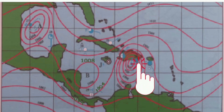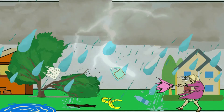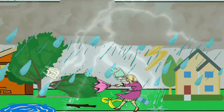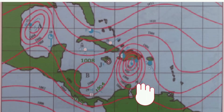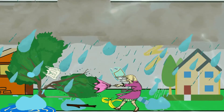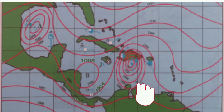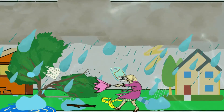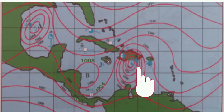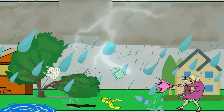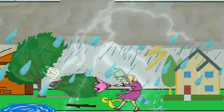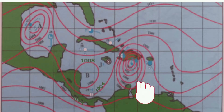This is because after the eye passes, the other side of the eye wall will begin to pass over. Suddenly, the winds will once again become stronger, though this time blowing in the opposite direction — from the south. Anyone still on the outside at this time may be in serious danger.